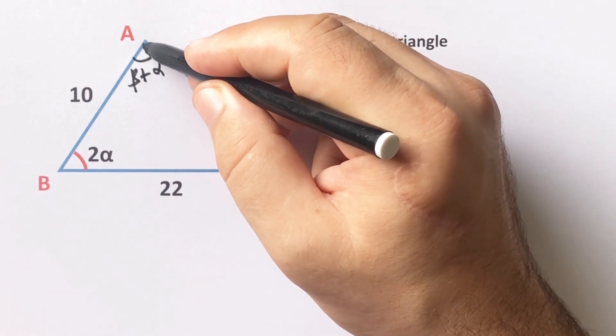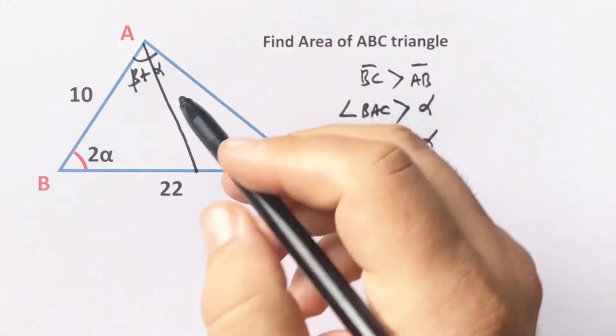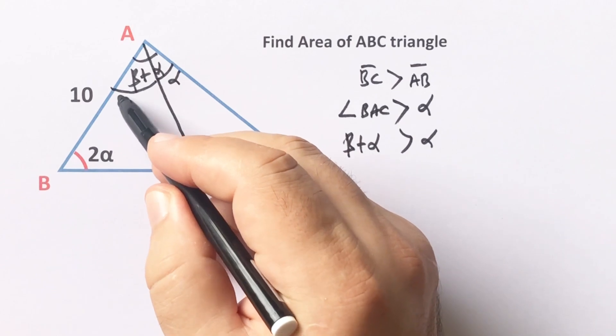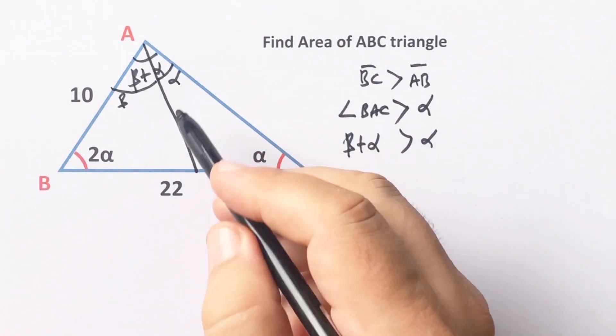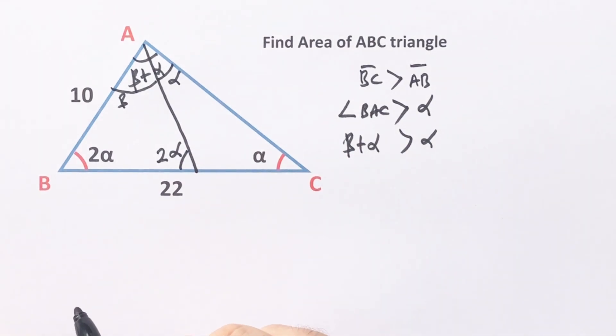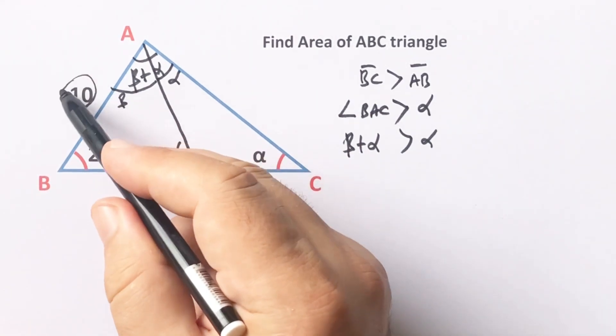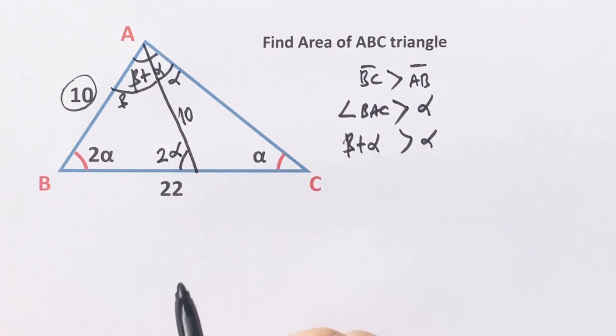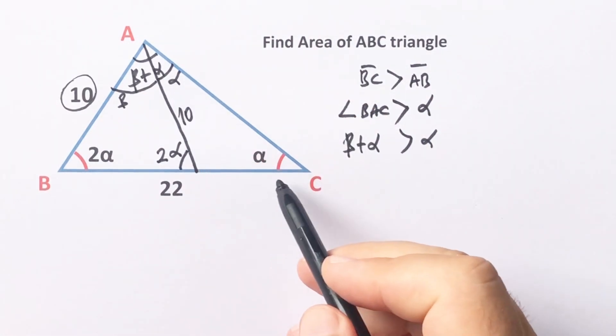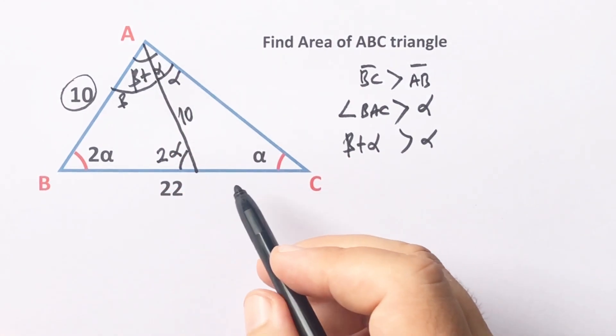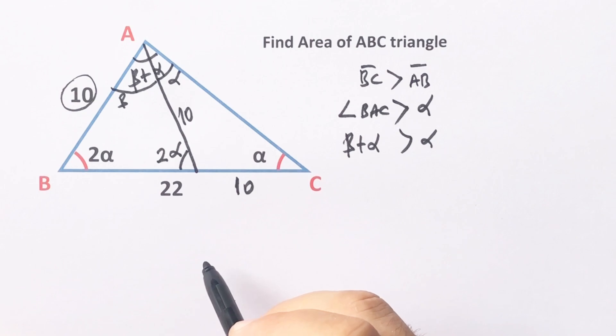Let's separate the angle with alpha and beta. Notice that this angle must be 2 alpha, right? So if it is 10 units, this side must be 10 units. And then notice that this triangle is also isosceles triangle, so this length must be 10 units.